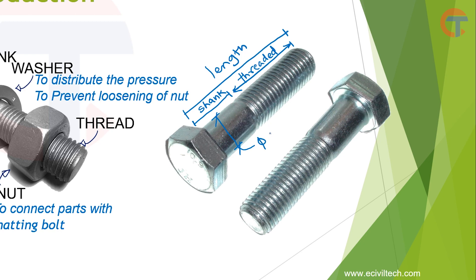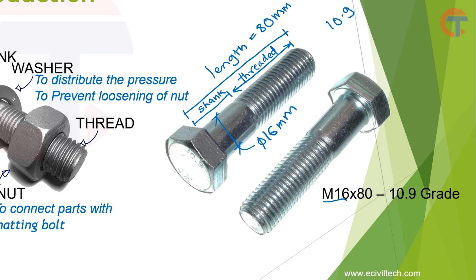Let's assume the diameter of this bolt is 16 mm, total length is 80 mm, and the grade of bolt is 10.9. How do we represent this on a drawing? We put M for the diameter, so the bolt is M16 — meaning the diameter is 16 mm. Then multiply by 80 for the length in mm, then dash 10.9 for the grade. So on the drawing it will read: M16 × 80 - 10.9.